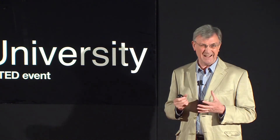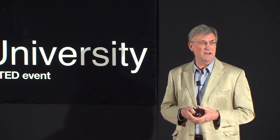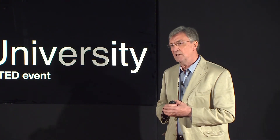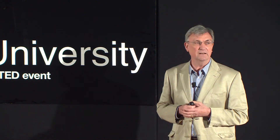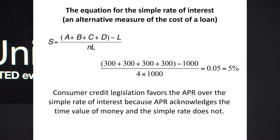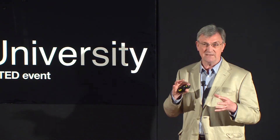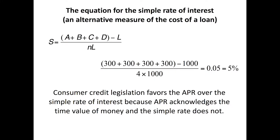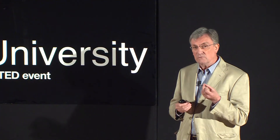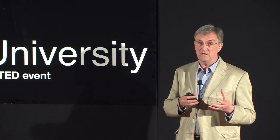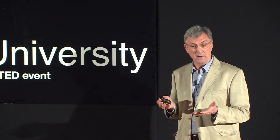If you ask how that's calculated, it's a very complex calculation. What very often happens is that the salesperson will tell you about the simple rate of interest, which is an alternative to the APR — called simple because it's much easier to calculate. All you do is add up those payments A plus B plus C plus D, take away the amount of the loan, and what you get is the finance charge: the excess above what you pay compared with what you receive. That finance charge divided by the loan amount L, divided by the number of years N, gives the finance charge per pound borrowed per year — in this case, 5%. Although you're legally allowed to quote the simple rate, the legal rate you must quote is the APR, because the APR includes the concept of the time value of money, which the simple rate doesn't.